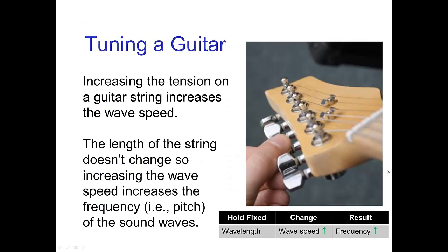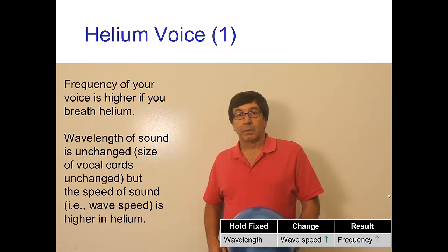Another example of the relationship among wavelength, wave speed, and frequency is if we are tuning a guitar and we adjust the tension on the guitar string, increasing the tension increases the wave speed. Now, the length of the guitar string basically stays the same. So in that case, the wavelength, the length of the string stays fixed. We increase the tension, which increases the speed of waves on the string, and that increases the frequency of the note.